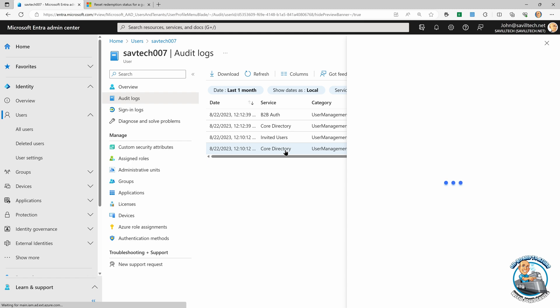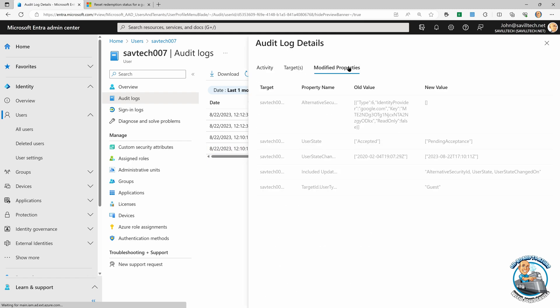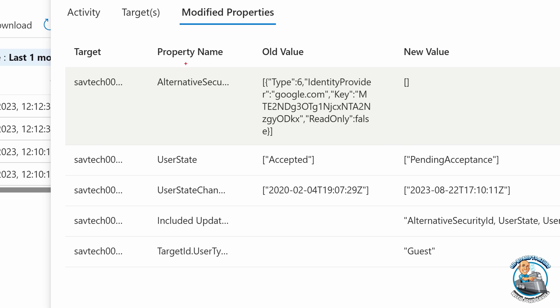So if we look at the core directory action, so if we look at the modified properties, what you can see it did was that alternative security, it used to be linked to the Google, it blanked it out. And it changed it from user state accepted to pending acceptance.